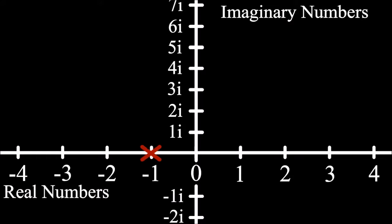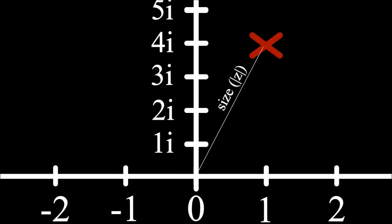On this plane, the number negative 1 is here, i is here, and the number 1 plus 4i is here. So complex numbers not only have a size, but also a direction.